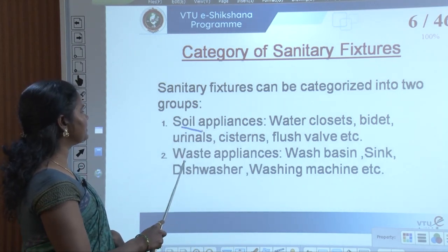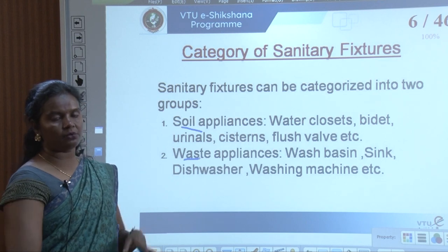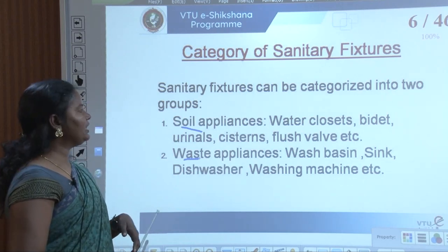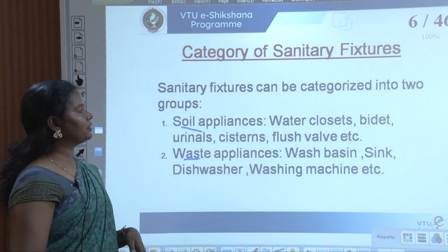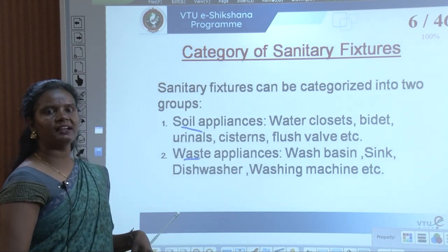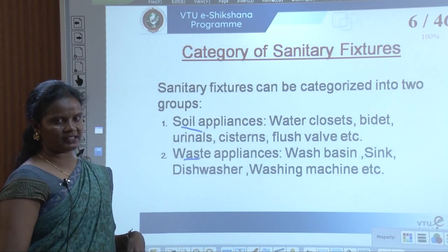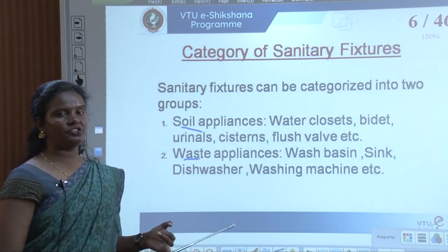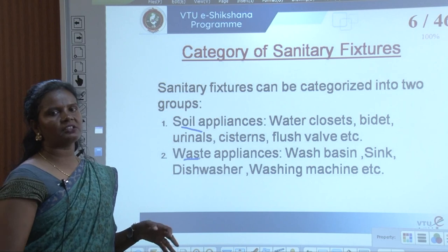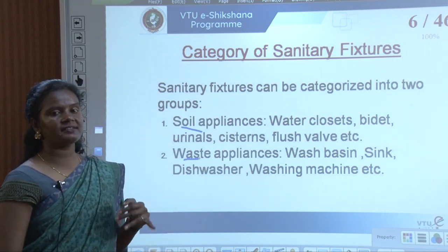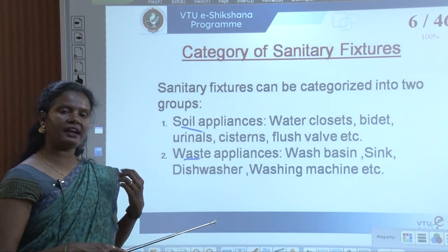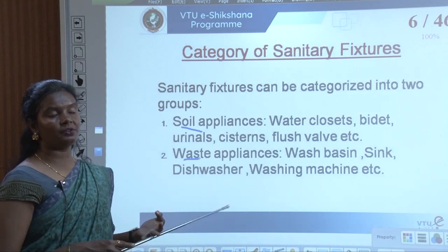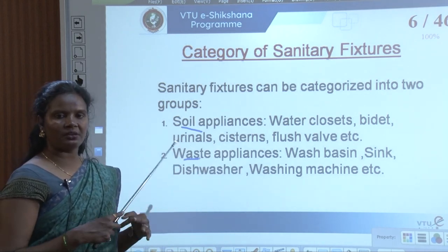When dividing sanitary fixtures, we can divide them into two things: soil appliances and waste appliances. Broadly the classification can be made into two parts. Soil appliances, as already said, are water closets, bidet, urinals, cisterns, flush walls, etc. Waste appliances include wash basin, kitchen sink, wash basin used in washroom and hand wash areas, dishwasher, and washing machine.